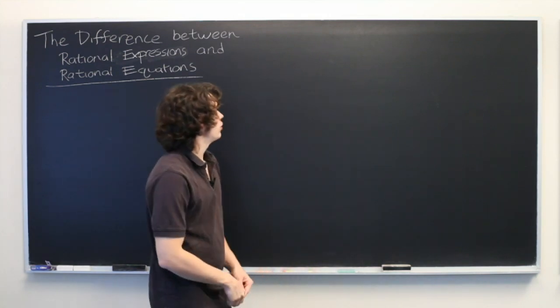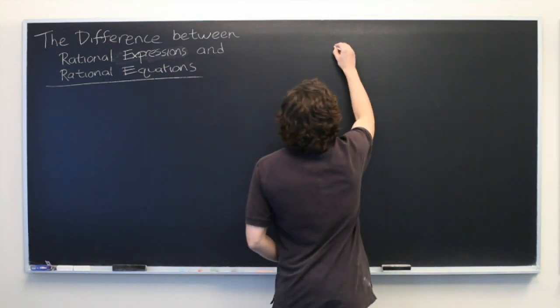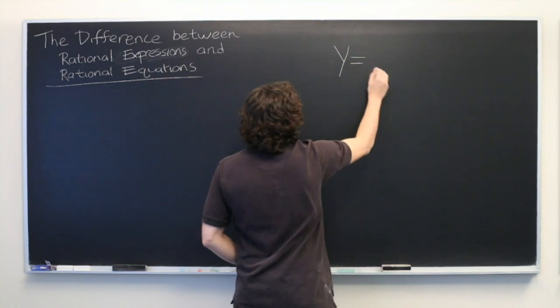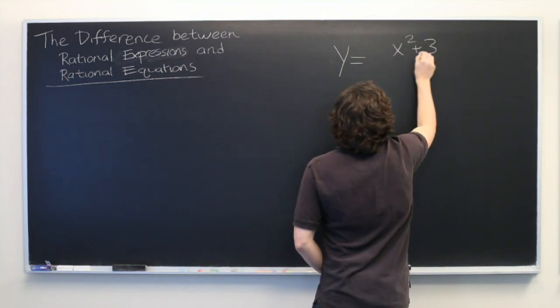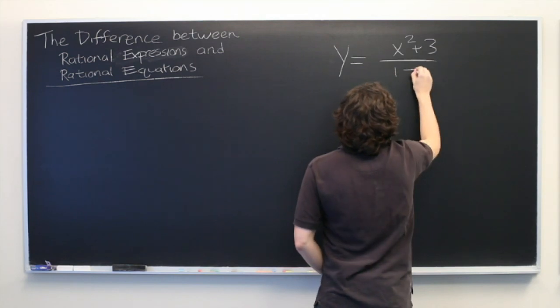So first let's just give an example of each. The rational equation might look something like y equals x squared plus 3 over 1 minus x.